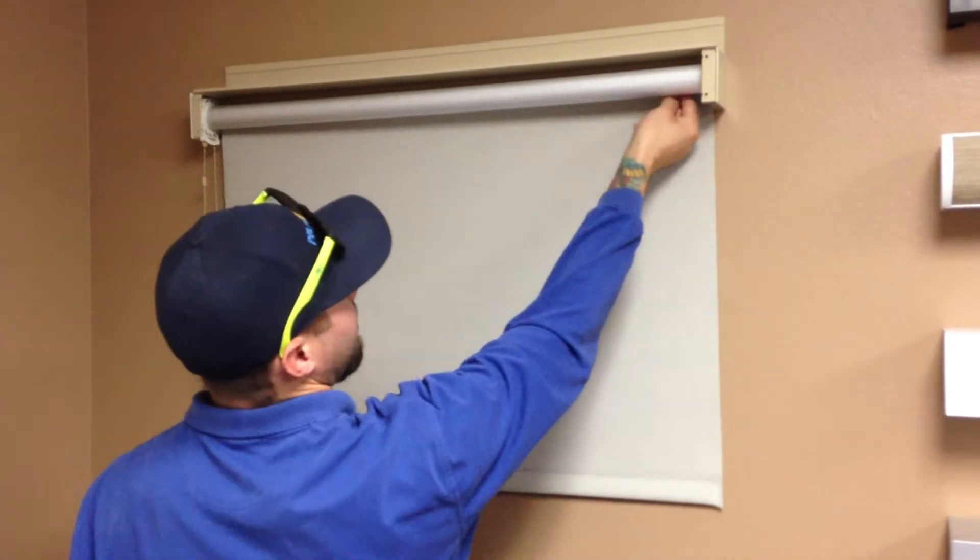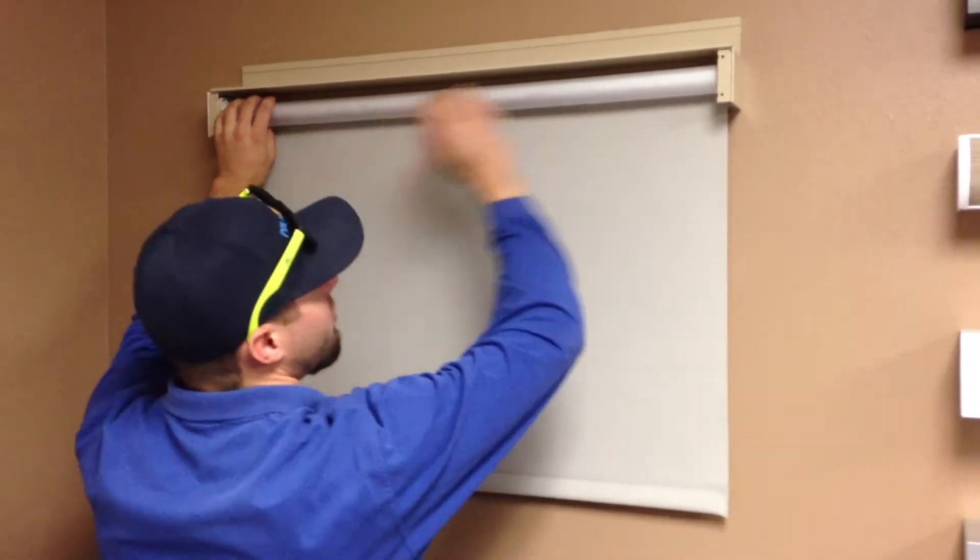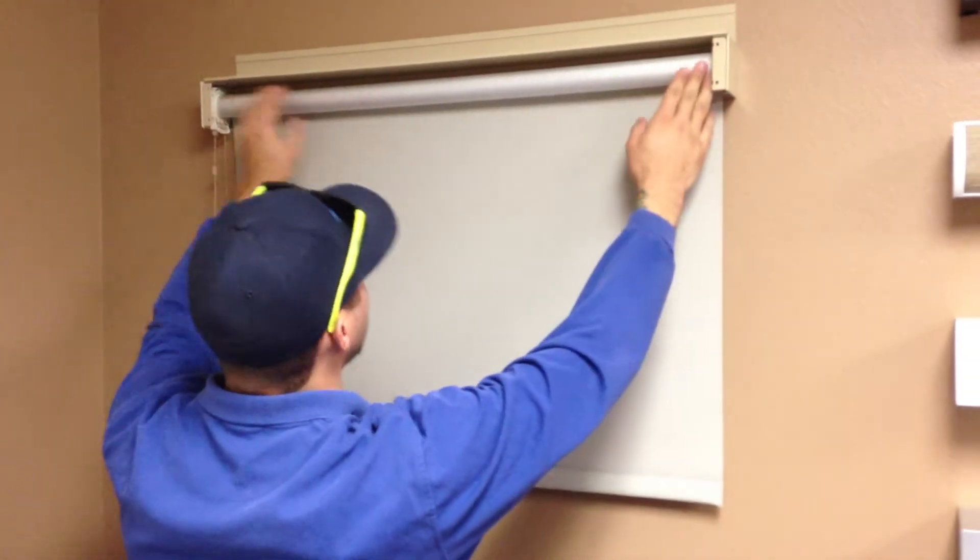Put it on the right side. If the shade is walking to the left, you want to shim the right. If it's walking to the right, you want to shim the left.